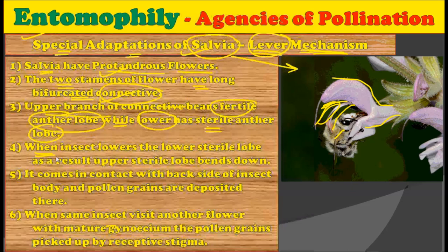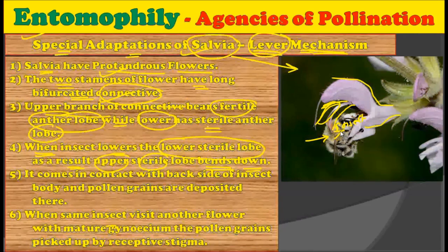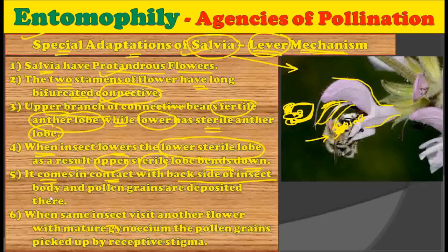When an insect visits the flower, it sits on the lower sterile lobe. When the insect pushes down the lower sterile lobe, the upper fertile lobe bends down onto the back of the insect. It comes in contact with the back side of the insect body and pollen grains are deposited there — so fertile pollen grains are deposited on the back of the insect by the upper fertile lobe of the anther.